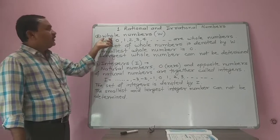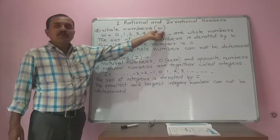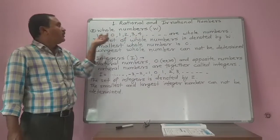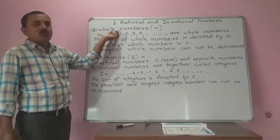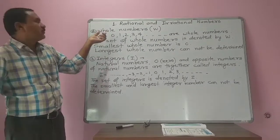Next to this, second: whole numbers. The set of whole numbers is denoted by W.